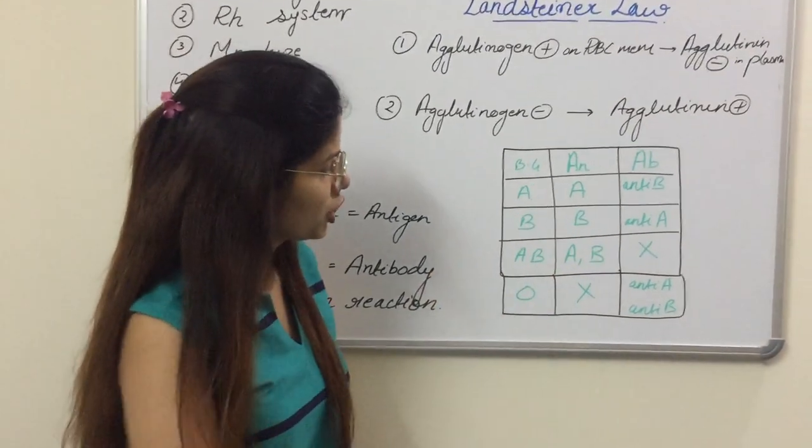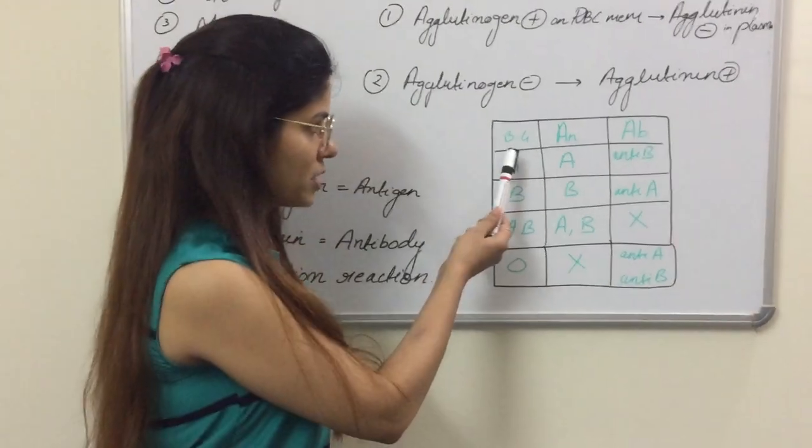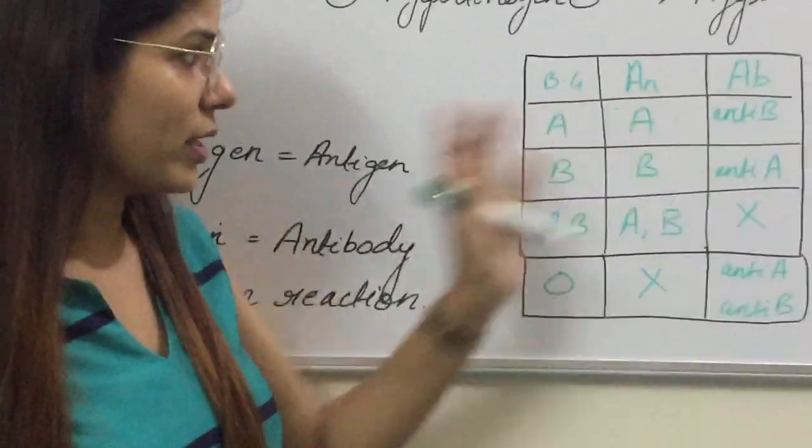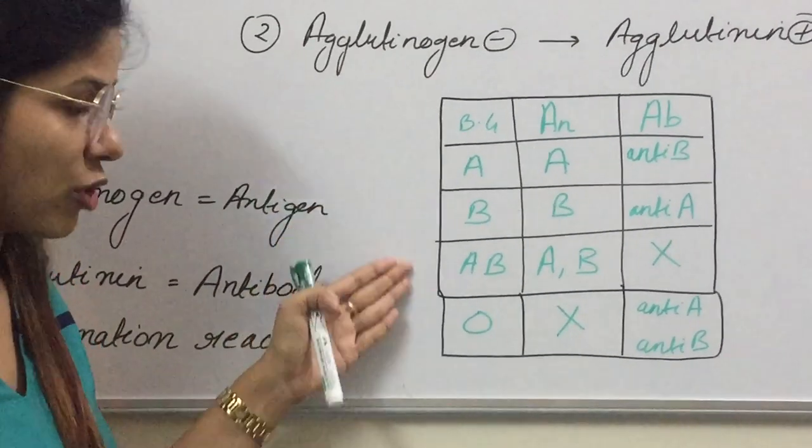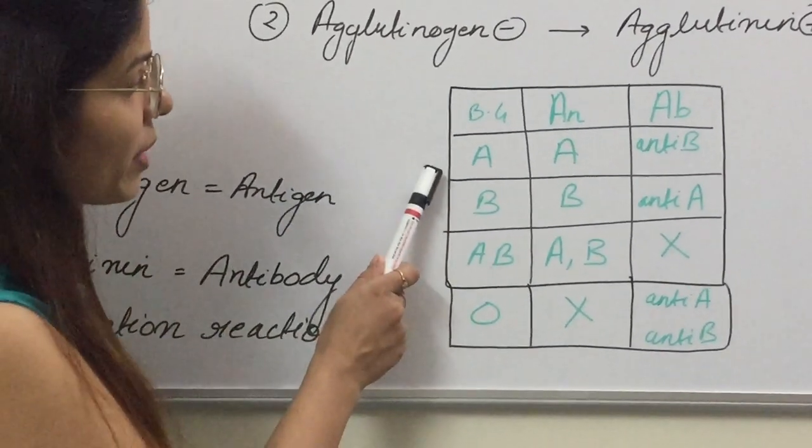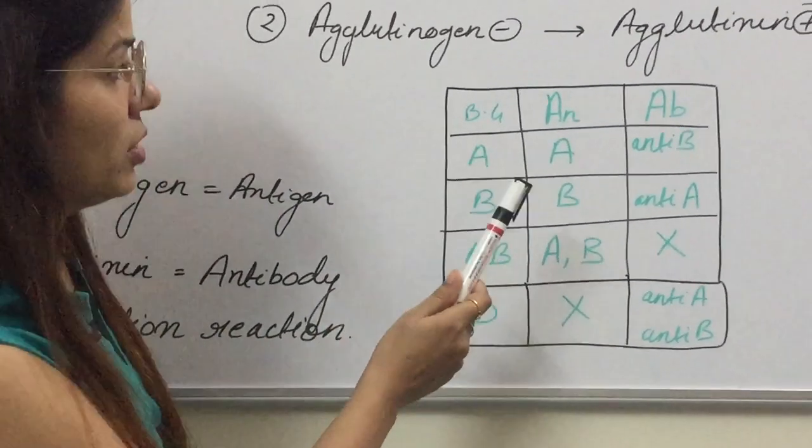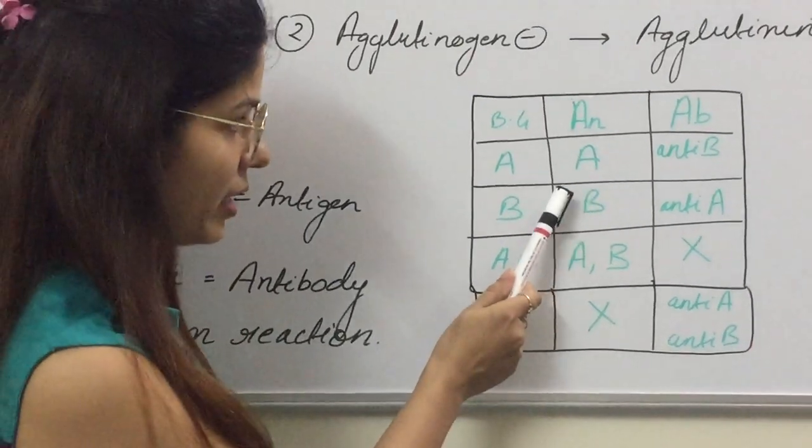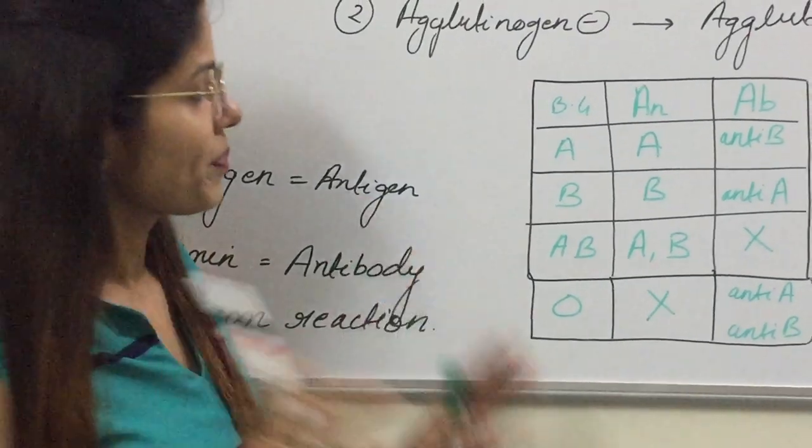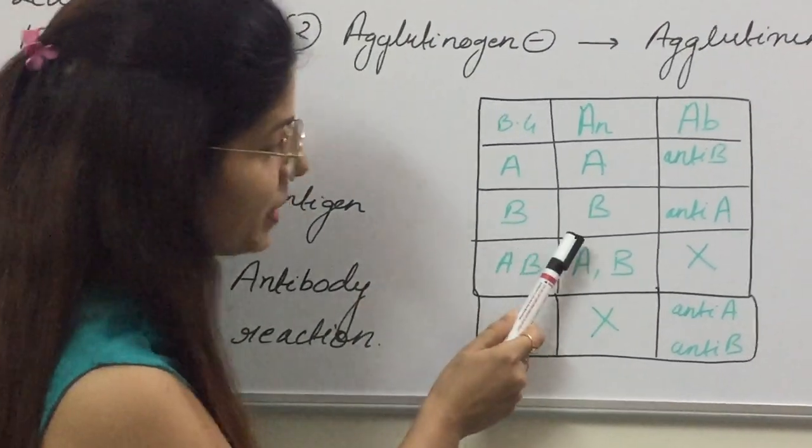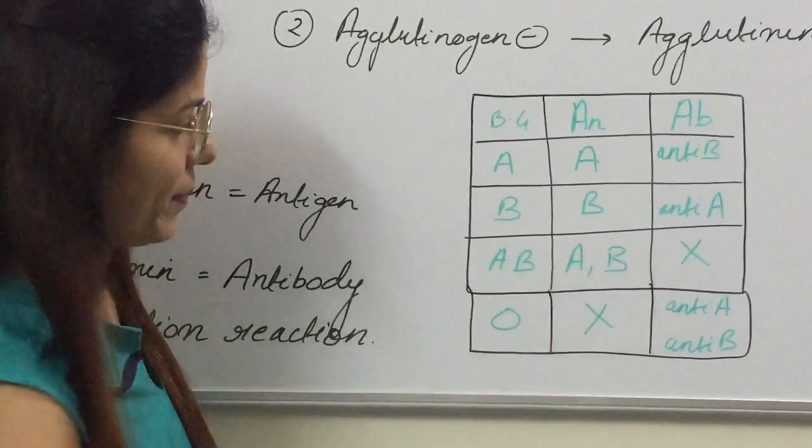This is the table which contains blood group system, antigen and antibody. In the ABO blood group system, we have four types of blood grouping. The first is blood group A which has antigen A on the RBC membrane and antibody anti-B which is present in plasma. The blood group B has antigen B and antibody anti-A.